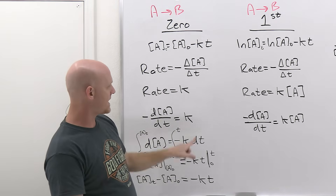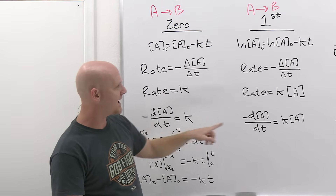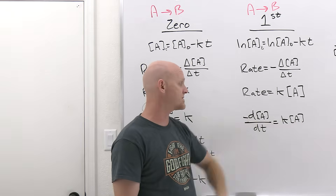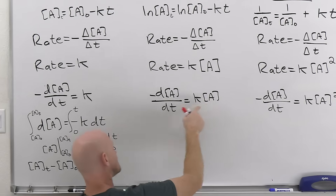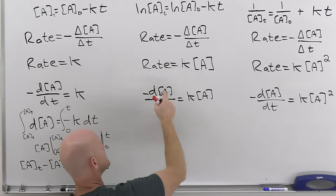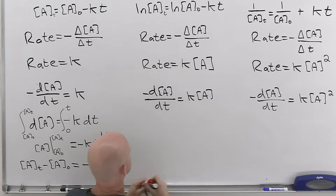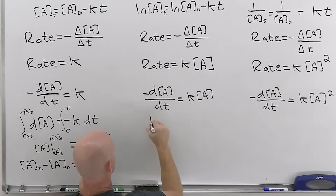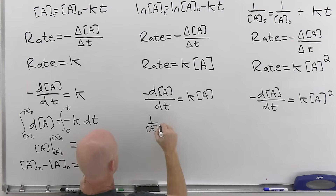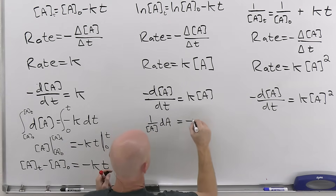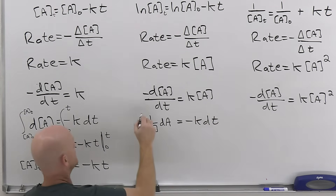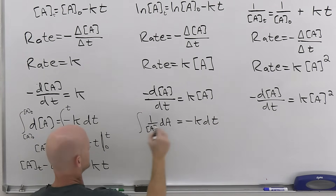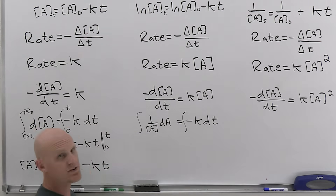For the first-order reaction, instead of just plain K, we have K times A. When we do separation of variables, we need to get the A over with the dA's and the dt on the other side. So in this case we get one over A times dA equals negative K dt.